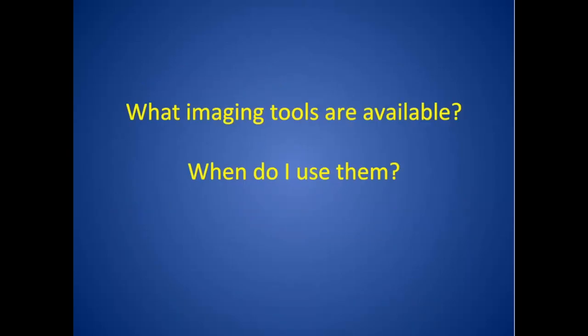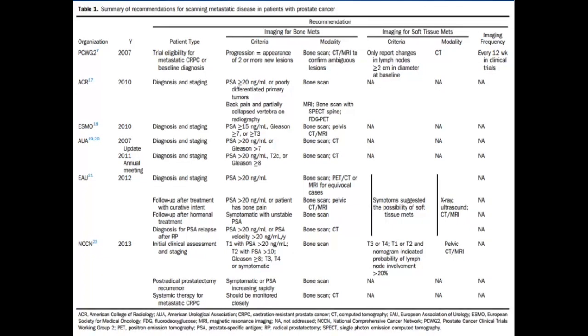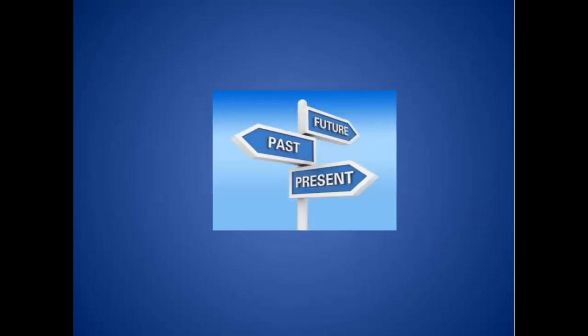There are a couple of important questions here: what imaging tools are available — and this is really confusing because there have been a lot of developments in radiology and nuclear medicine — and when do I use them? This table from the RADAR article in 2015 goes over the different recommendations from the AUA, ACR, and Prostate Cancer Working Group Two, and there are a lot of differences among these societies, which creates confusion.